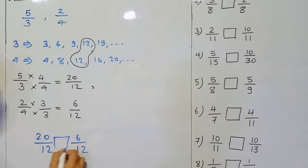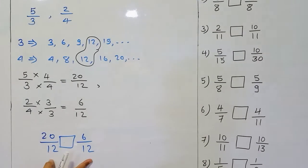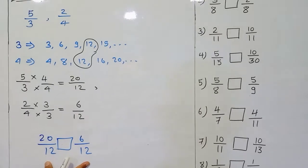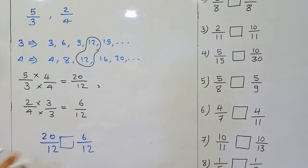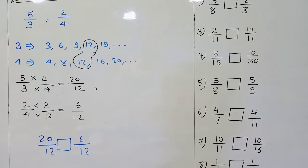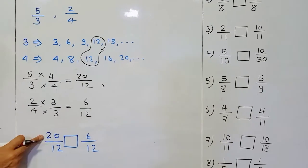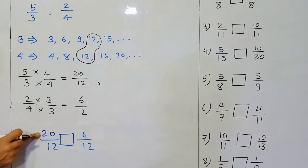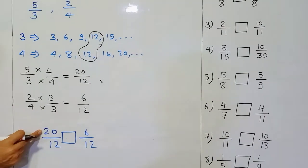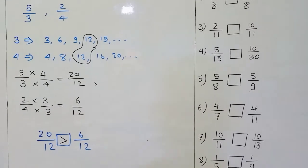Now we have to decide which one is greater. This time we have equal denominators, meaning like fractions. As we learned in the first type of comparison — when we have like fractions, we decide according to the numerator. Between 20 and 6, which one is greater? 20. So we can easily say 20 upon 12 is greater than 6 upon 12.